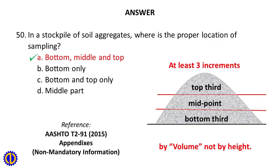Question 50: Answer: A. Bottom, middle, and top. Reference: AASHTO T2-91-2015, Appendixes, Non-mandatory information — At least three increments: top third, midpoint, and bottom third, by volume, not by height.